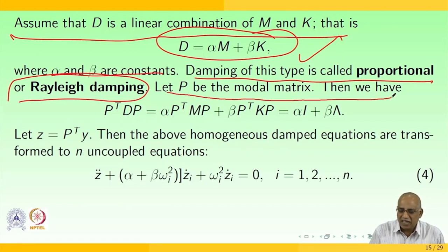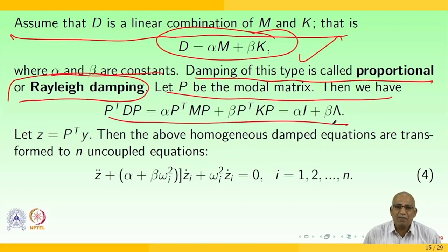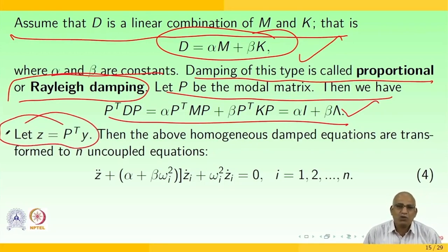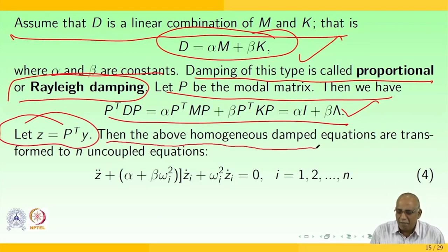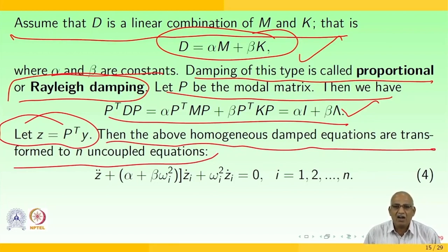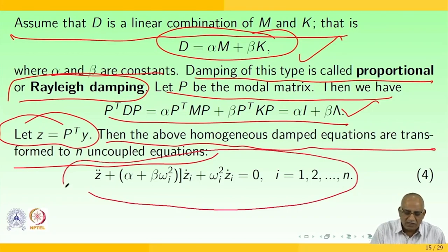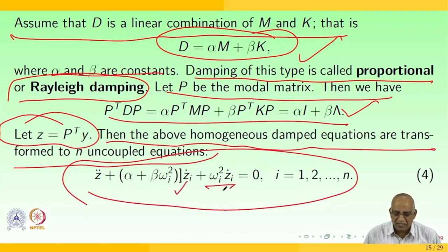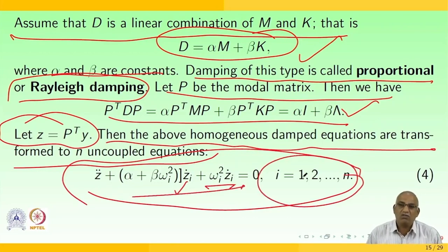Let P be the modal matrix. Then P^T·D·P = α·P^T·M·P + β·P^T·K·P = αI + βΩ. Let z = P^T·y. Then the homogeneous damped equations are transformed into n uncoupled equations: z_i'' + (α + β·ω_i²)·z_i' + ω_i²·z_i = 0, for i = 1 to n.